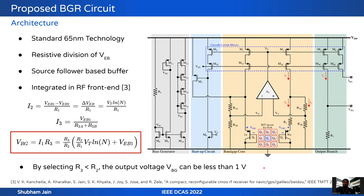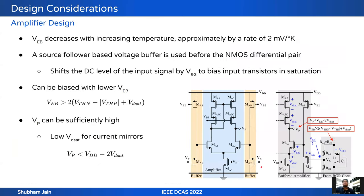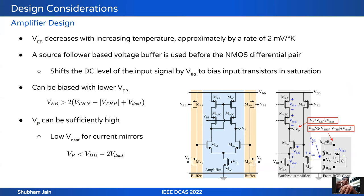Different circuit blocks of the design are discussed. This is the amplifier design. Properly biasing the amplifier is crucial to maintain sufficient loop gain throughout operation. VEB of the BJT decreases approximately 2 mV per degree Kelvin. A source follower based buffer is used before the NMOS differential pair. This buffer shifts the DC level of the input voltage by a value equal to VSG, biasing the input transistors of the amplifier into saturation. The amplifier can now be biased with a lower VEB, with the limit on VEB given by the derived equation.